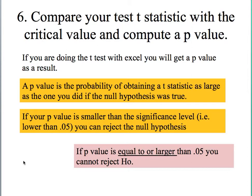But if your p-value is equal or larger than your significance level, you cannot reject the null hypothesis — and if you cannot reject it, you cannot accept it either. The p-value is the probability of obtaining a t-statistic as large as the one you did if the null hypothesis was true. If that probability is smaller than the significance level — for example, lower than 0.05 — you can reject the null. If it is equal or larger, you cannot reject the null hypothesis.